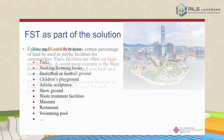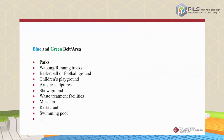So what can we build on this blue and green belt? There are many possibilities: parks, walking and running tracks, sports areas, children's playgrounds for families, artistic sculptures, showgrounds like those in Singapore, waste treatment facilities, museums, restaurants, swimming pools, and more.